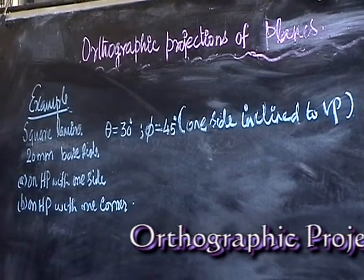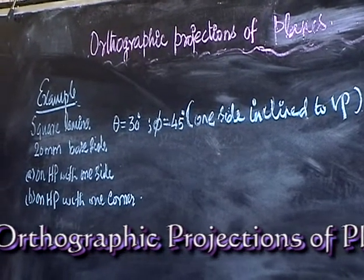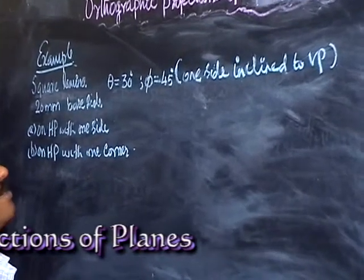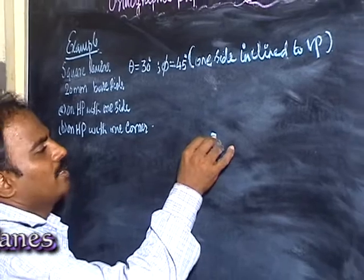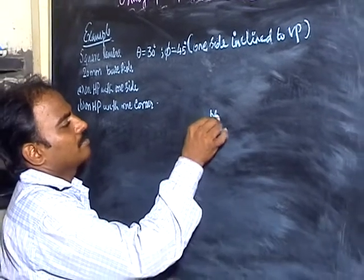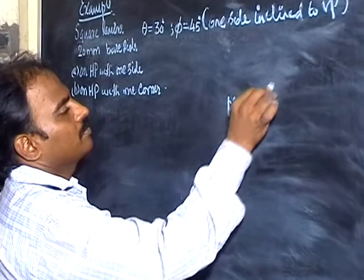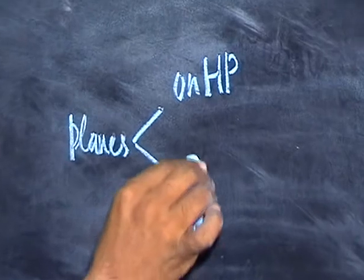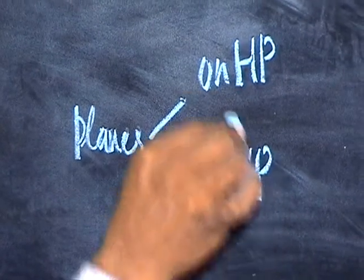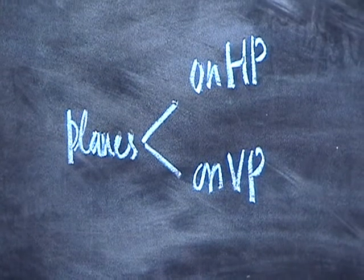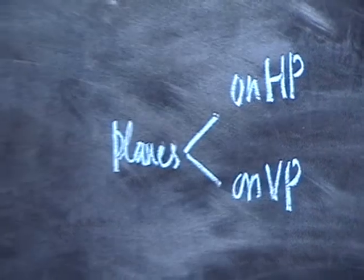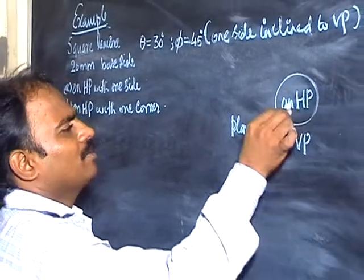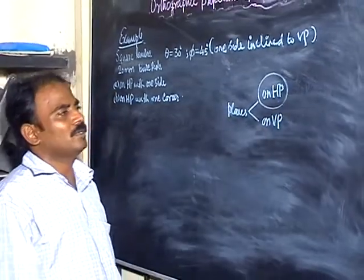Now let us look at the orthographic positions of planes. We are going to adopt a different strategy: identify the planes into two groups — one group is planes placed on HP, and the other group is planes placed on VP. Most of the problems you will encounter involve planes on HP.